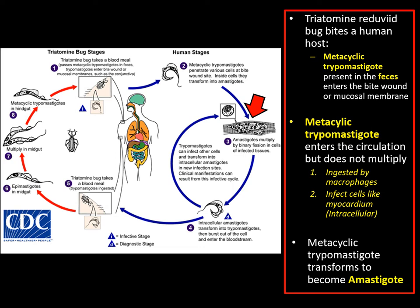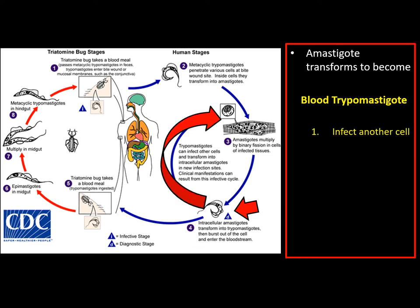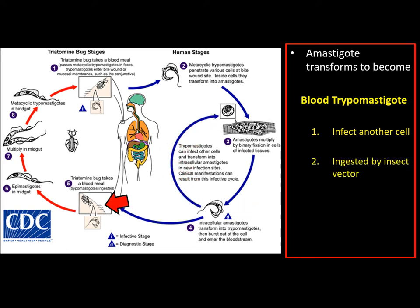After some time, these amastigotes transform to become trypomastigotes and are released extracellularly into the blood circulation. These blood trypomastigotes have two fates: they might infect another cell, transform to become amastigote intracellularly, and multiply repeating the cycle, or they might be ingested by the insect vector during biting. Hence, blood trypomastigote is the infective stage to the insect vector.